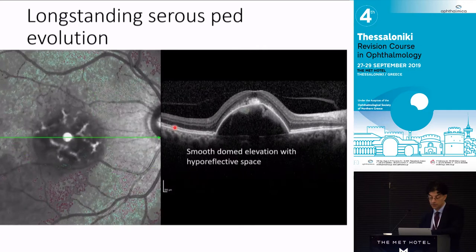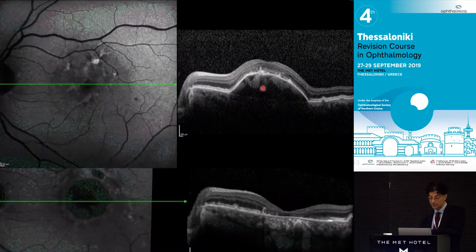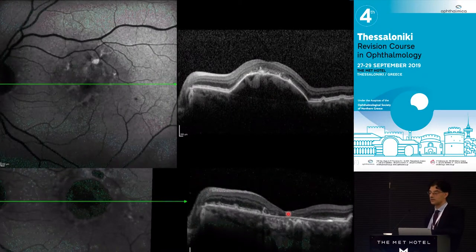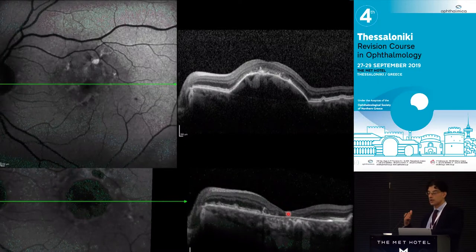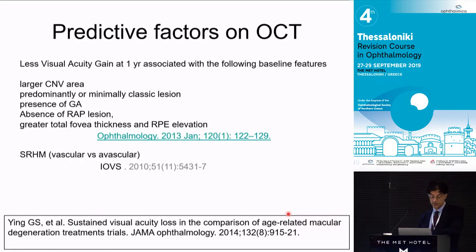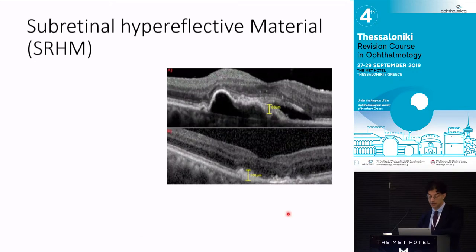Vitreomacular traction may also alter your decision making. The serous PED can be confusing as it evolves and starts collapsing — half will collapse causing atrophy, half will get choroidal vascularization. Even if there's no CNV when you first see the patient, warn them: document the discussion, because if they come back in six months with CNV they may say you missed it. From natural history studies including the AREDS trial, these patients unfortunately do very badly. Predictive factors for poor outcomes include large CNV area, presence of geographic atrophy at baseline, and subretinal hyperreflective material.